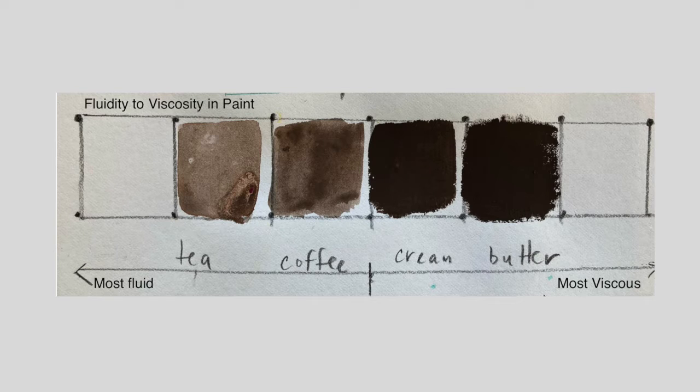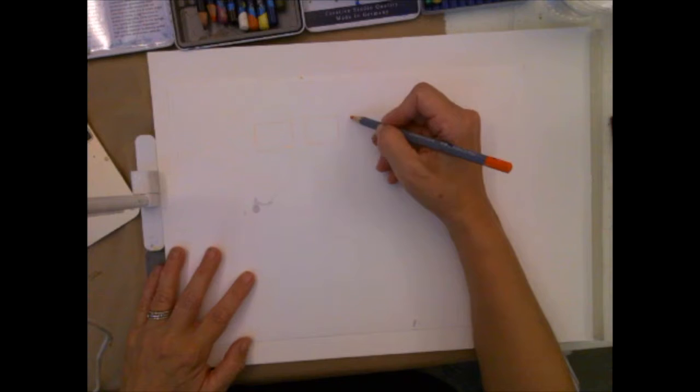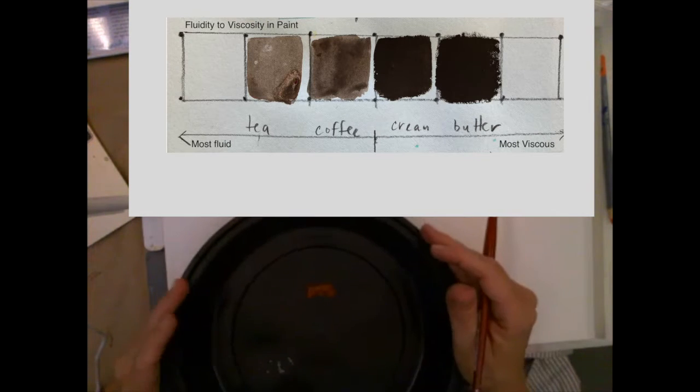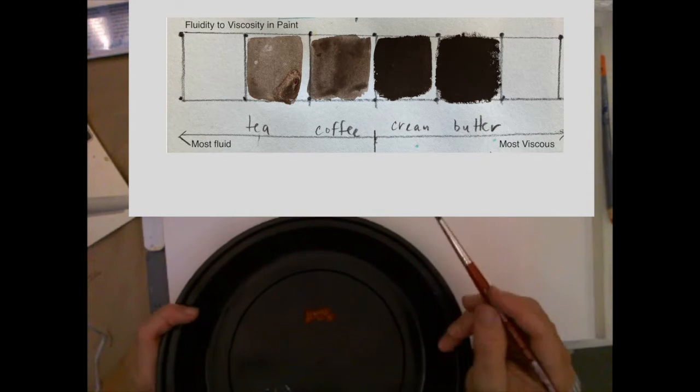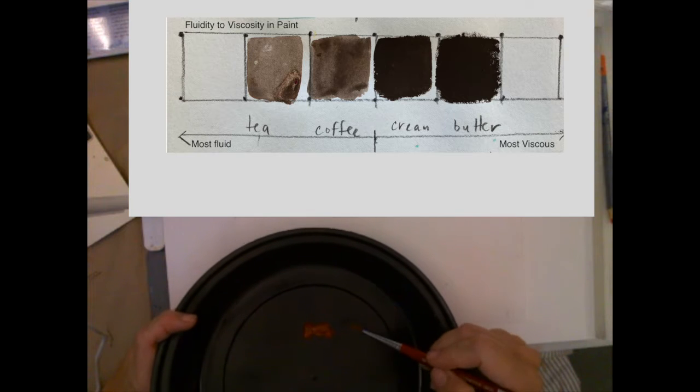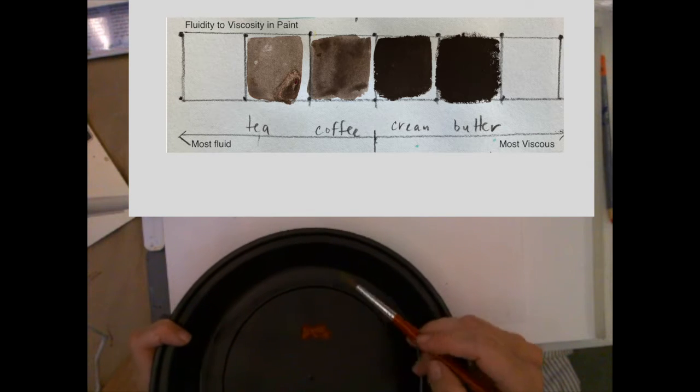So I'm going to set up four boxes and we're going to mix these viscosities together. The first thing you want to do is paint butter. And what butter is, is butter has no water, no extra water in it.